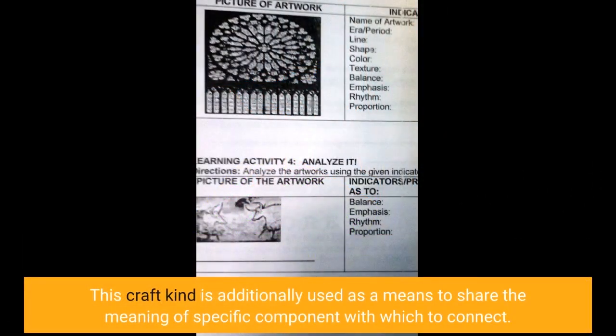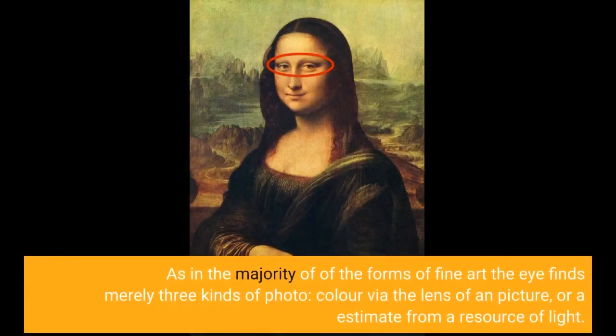This art form is additionally used as a means to express the meaning of specific components with which to connect. As in most forms of fine art, the eye finds three kinds of image: color through the lens of a picture, or visual estimation from a source of light.